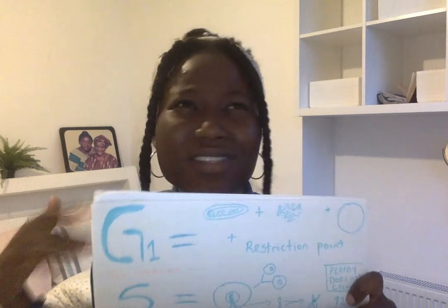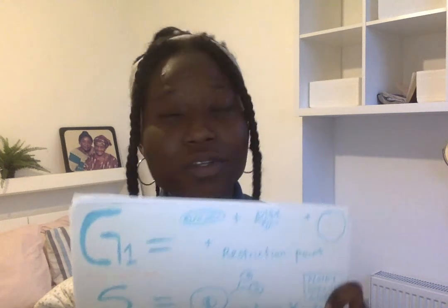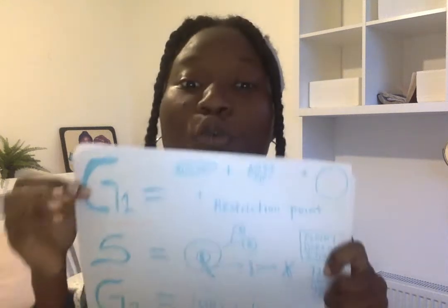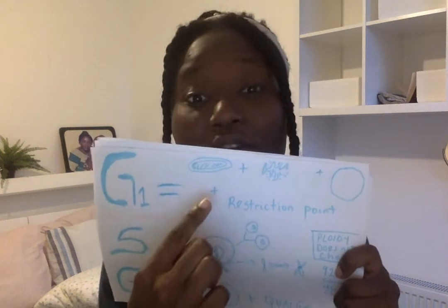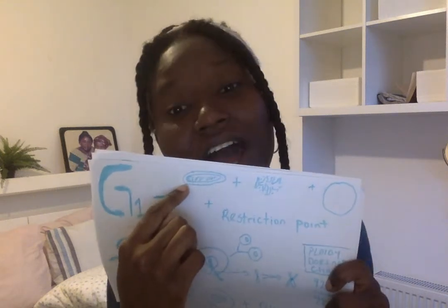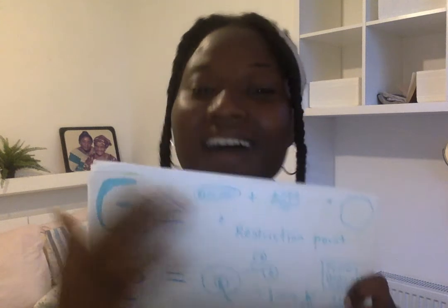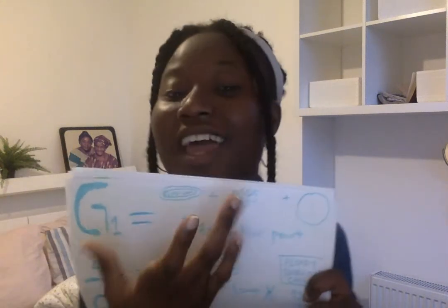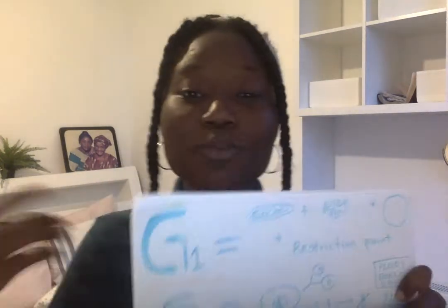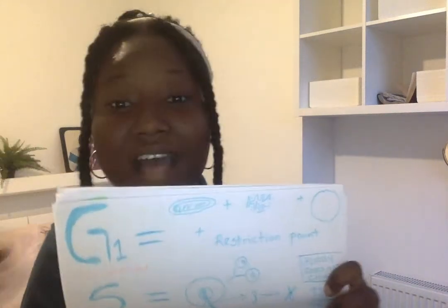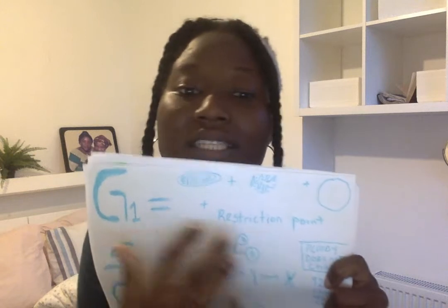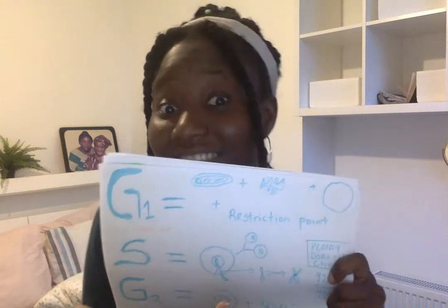From G0 to G1: in the G0 the cell wasn't preparing to divide, just carrying out normal functions. Now in the G1, what happens? Your cell that was not planning on dividing will begin to produce organelles - it will begin to produce mitochondria, ribosomes, and endoplasmic reticulum. These are for energy and protein synthesis. So basically in your G1 stage the cell begins to produce organelles it will use for energy and protein synthesis.